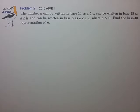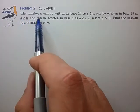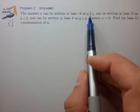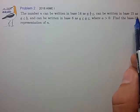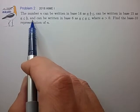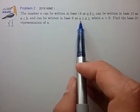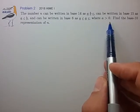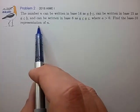Hi, this is problem 2 from the 2018 AIME I. The number n can be written in base 14 as abc, can be written in base 15 as acb, and can be written in base 6 as acac, where a is greater than 0. Find the base-10 representation of n.